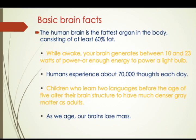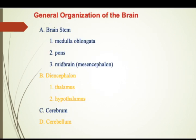If you look at the general organization of the brain, you have the brain stem, the diencephalon, the cerebrum, and the cerebellum. The brain stem consists of the medulla oblongata, the pons, and the midbrain. The diencephalon contains the thalamus and the hypothalamus. Each part does a very specific activity, and every part of the brain is equally important.